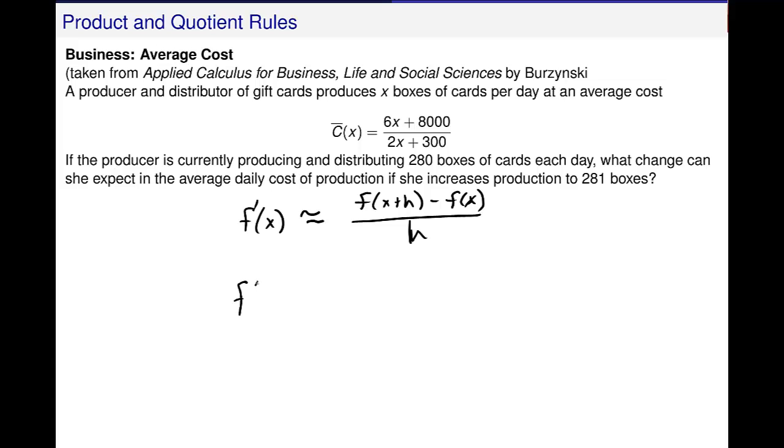So f prime, when h is 1, like in this case, I really get f prime is approximately f of x plus 1 minus f of x over 1, which is the same thing as, okay?